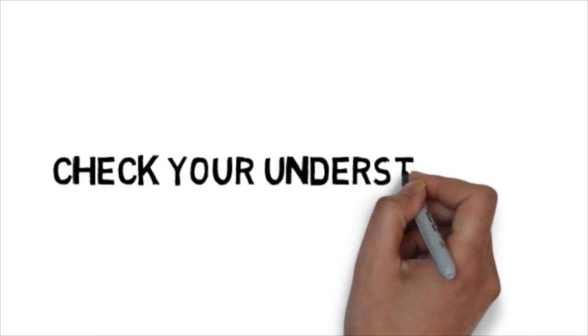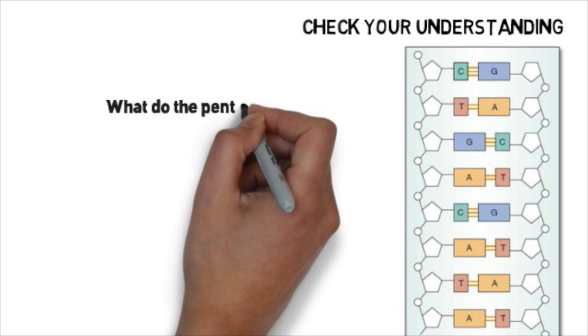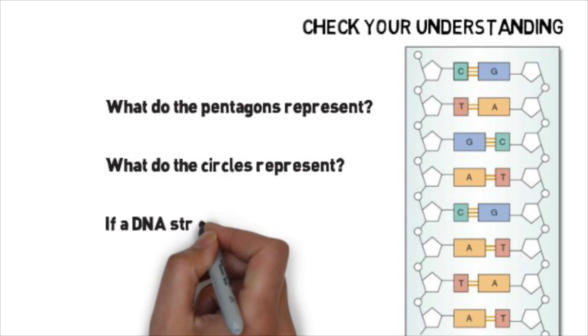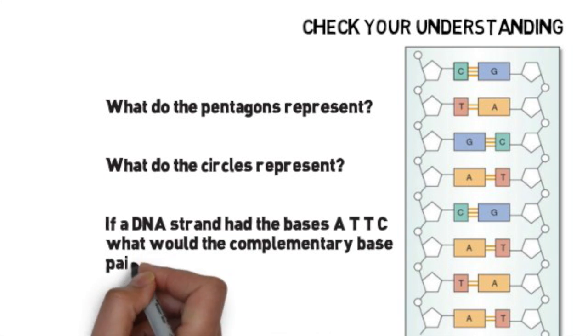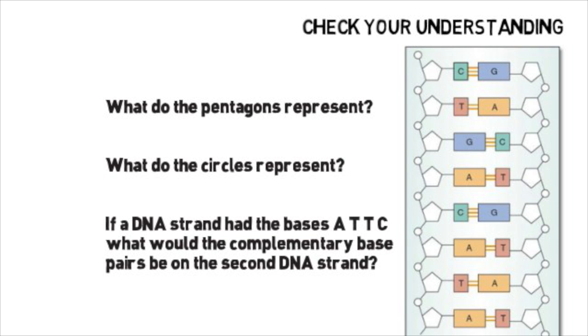Pause the video and answer the following questions to check your understanding. What do the pentagons represent? What do the circles represent? If a DNA strand had the bases A, T, T, C, what would the complementary base pairs be on the second DNA strand?